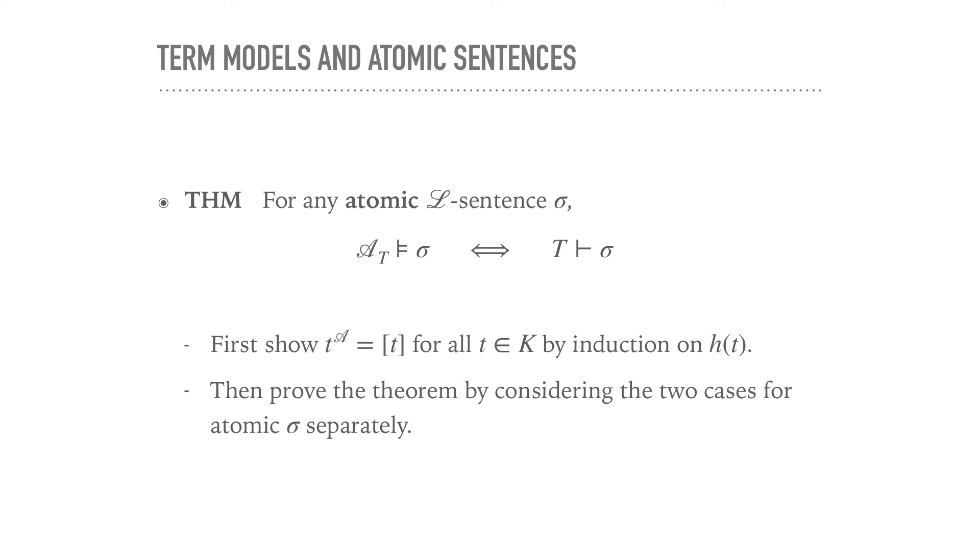And you show this by first showing that for every term, the interpretation of that term in our canonical term structure A is just the equivalence class of t. And you show that for all t in K. And as usual, you show it by induction on the height of t. And then you prove the theorem by just considering the two cases for atomic sentences separately.